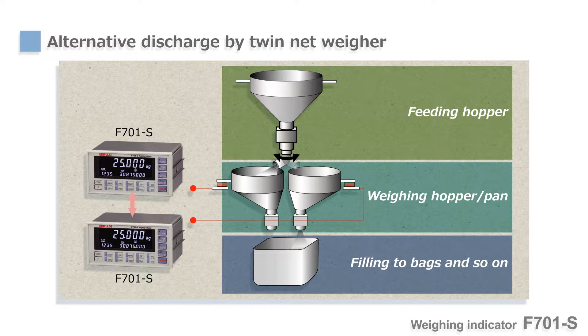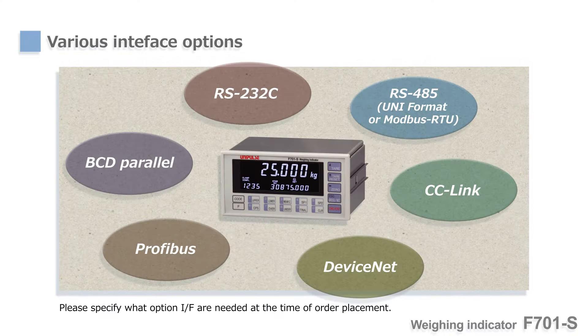In double sequence control mode, two units of F701S will perform weighing separately and communicate with each other for sequential control to synchronize the timing for bag clamping and so on.